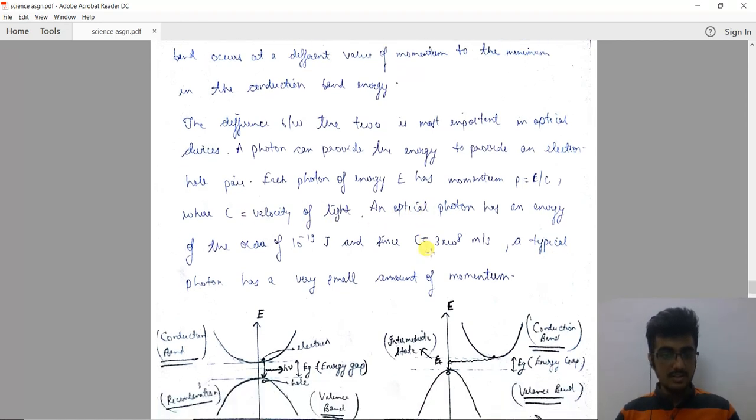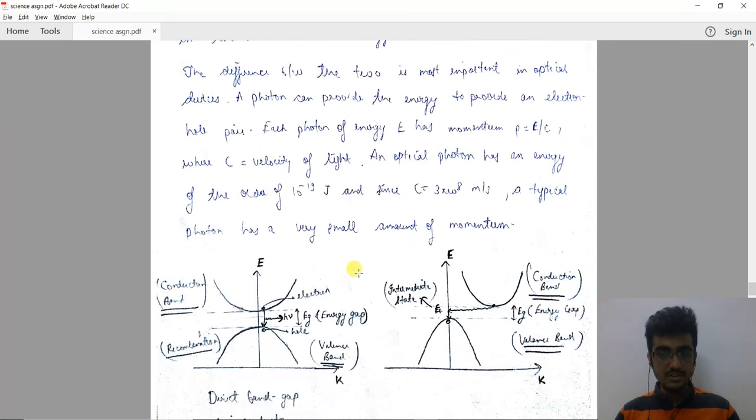An optical photon has an energy of the order 10^-19 joules, and since c equals 3×10^8, a typical photon has a very small amount of momentum.